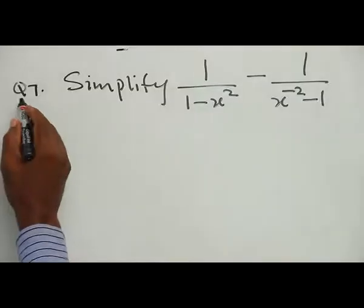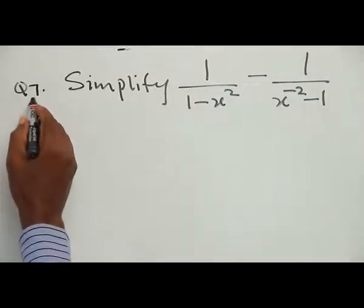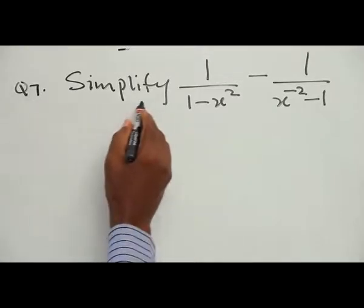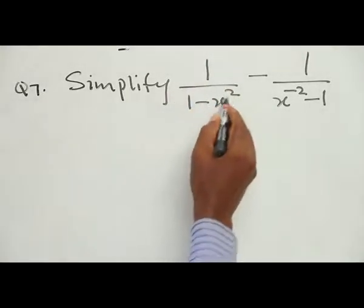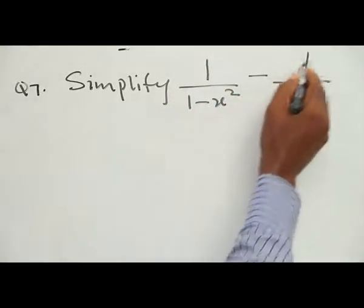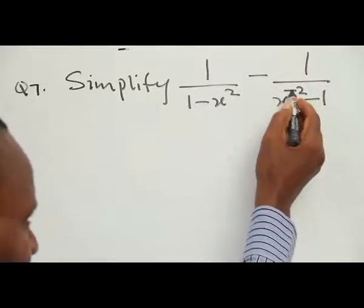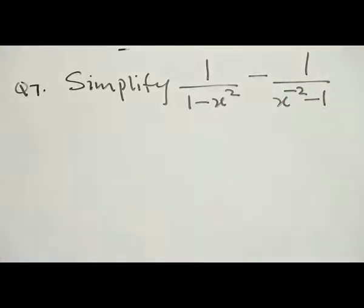Question number 7: Simplify 1 all over (1 minus S squared) divided by (1 all over S squared minus 1). We first rewrite the inner expression: 1 all over (S squared minus 1) becomes part of the denominator.